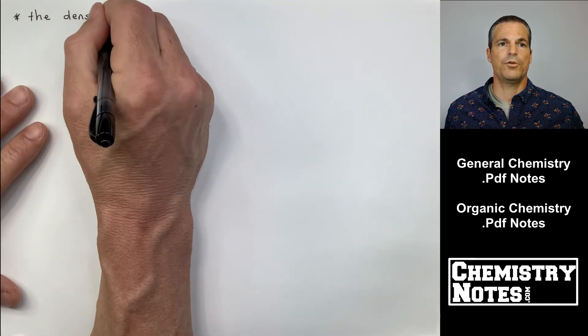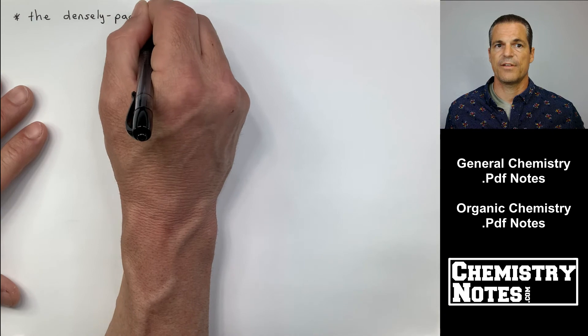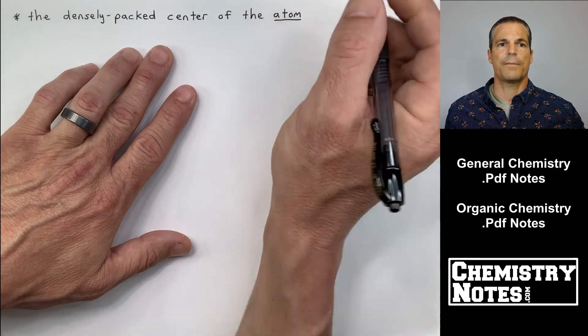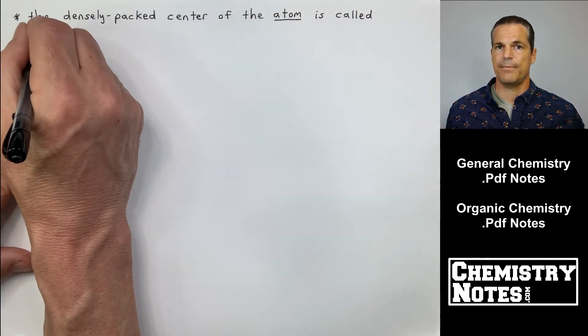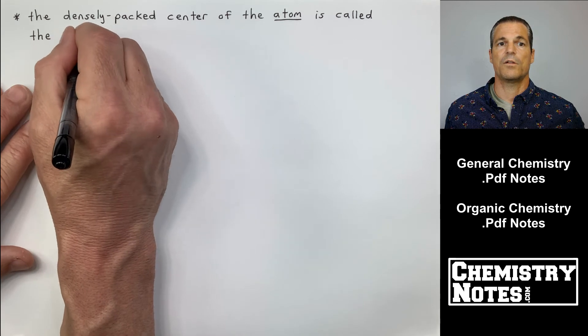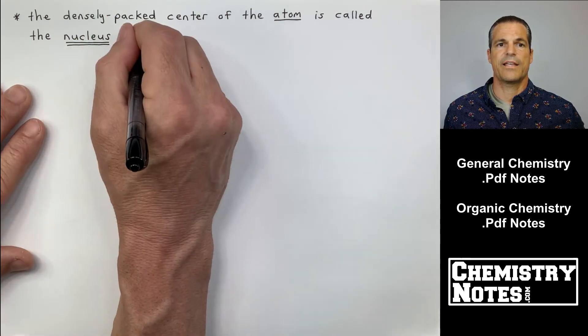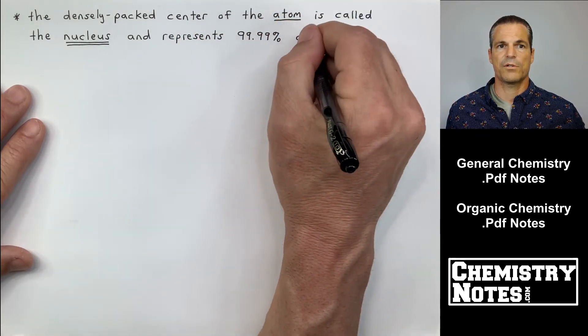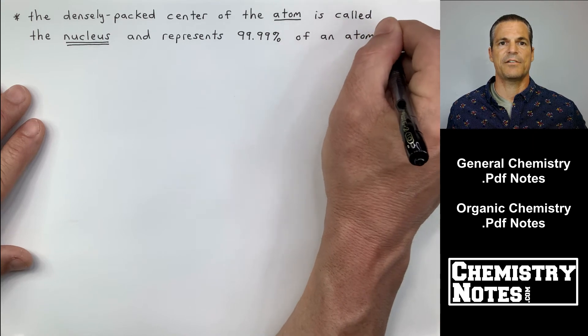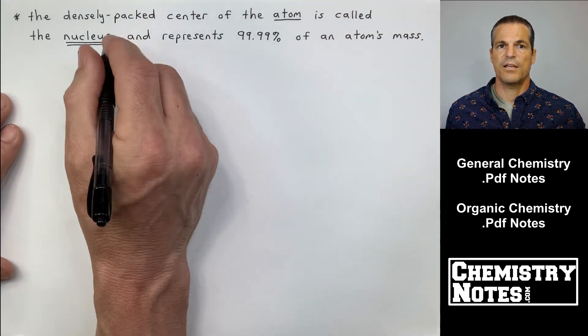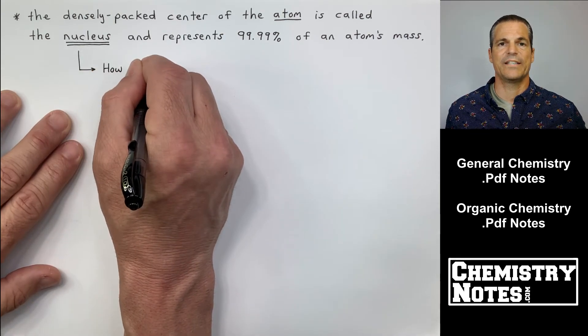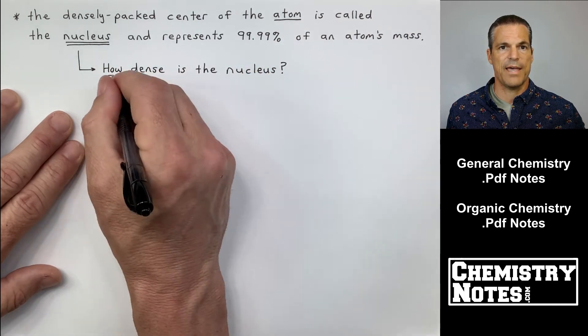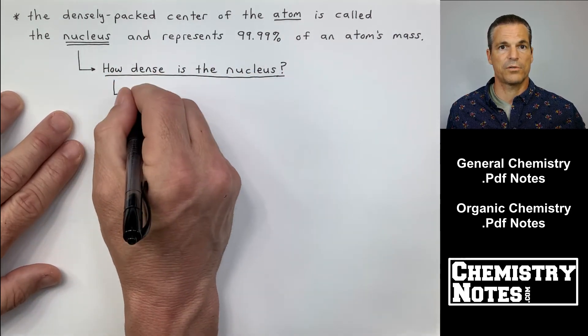Rutherford has just discovered the nucleus. At the top of a new page of notes here, the first star says the densely packed center of the atom is called the nucleus. This is 1911 Rutherford and his gold foil experiment, discovery of the nucleus. The densely packed center of the atom is called the nucleus. And that nucleus represents 99.99% of an atom's mass. Essentially, all of the atom's mass is the nucleus. In other words, protons and neutrons.